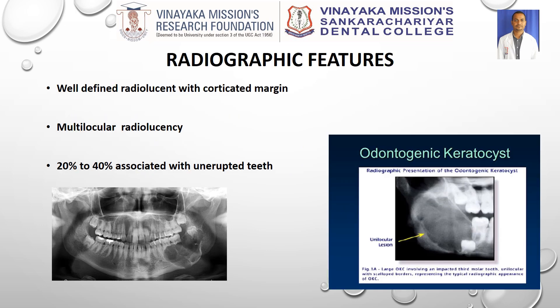Coming to radiographic features: when it is small, it shows a well-defined radiolucency with a peculiar corticated margin. When growing bigger, it produces a multilocular radiolucency. And 20–40% of cases have an impacted or unerupted tooth associated with OKC.